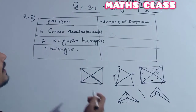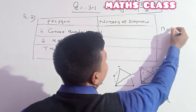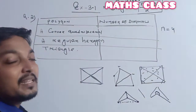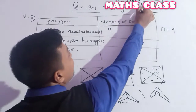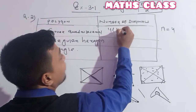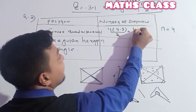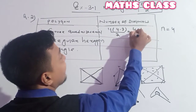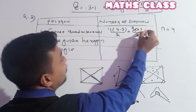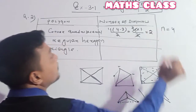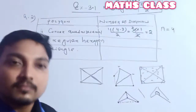For a convex quadrilateral: quadrilateral means the number of sides n = 4. Applying the formula: 4 × (4−3) / 2 = 4 × 1 / 2 = 4/2 = 2. So the number of diagonals a convex quadrilateral has is 2.